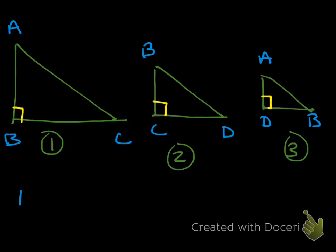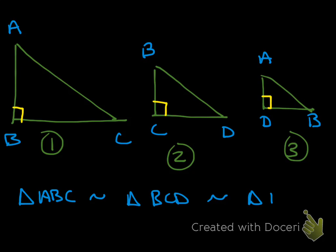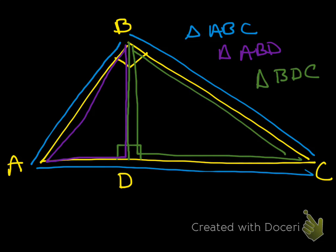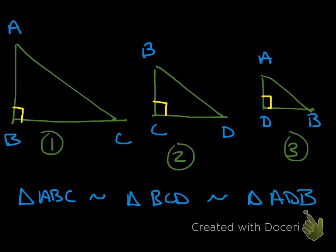If you're going to write your similarity statement, triangle ABC is similar to triangle BCD, which is similar to triangle ADB. It's hard to see when they're all overlapping like this, but if you were to pull them apart into three separate triangles, you can see that they are similar.